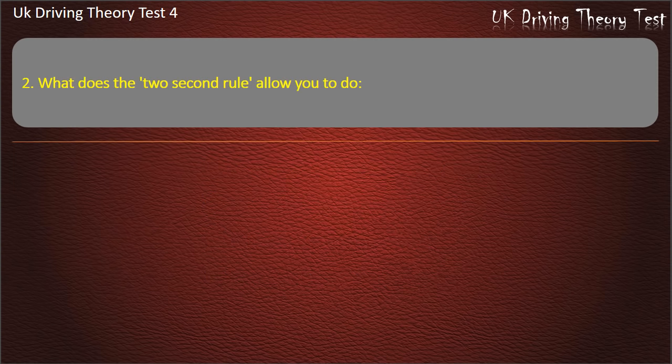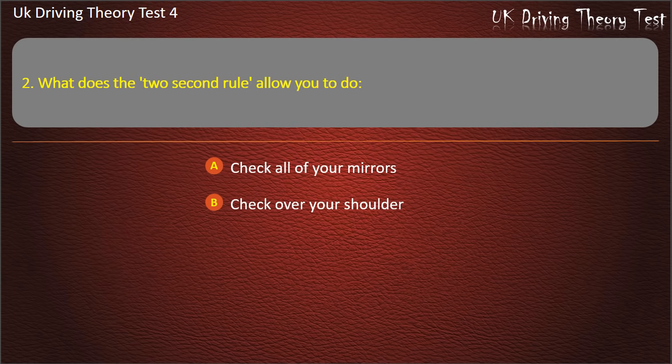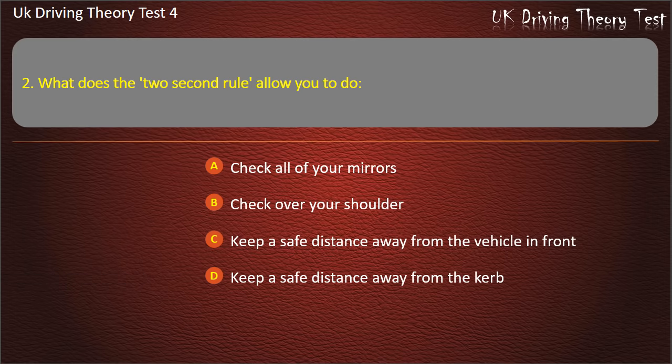Question 2. What does the 2-second rule allow you to do? Check all of your mirrors; check over your shoulder; keep a safe distance away from the vehicle in front; or keep a safe distance away from the curb. Answer: Keep a safe distance away from the vehicle in front.